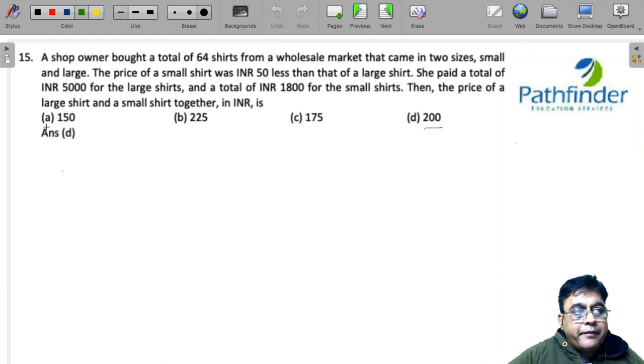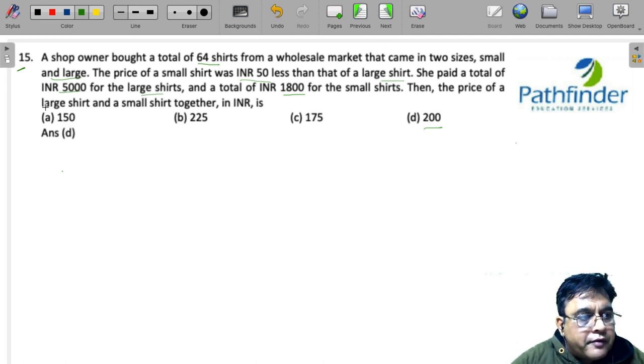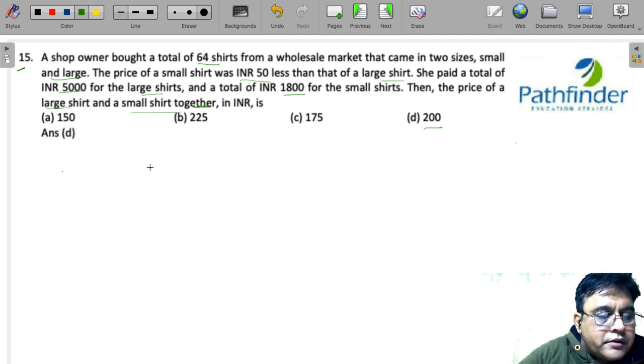Slot 3, quantitative aptitude question number 15. A shop owner bought a total of 64 shirts from the wholesale market that came in two sizes, small and large. The price of the small shirt was INR 50 less than that of a large shirt. She paid a total of INR 5000 for the large shirts and INR 1800 for the small shirts. Then, the price of large and small shirt together is...